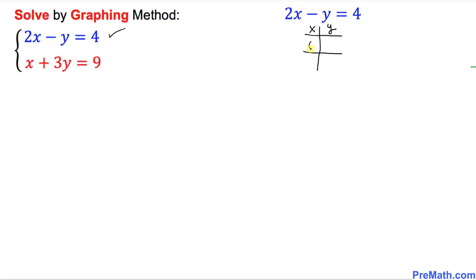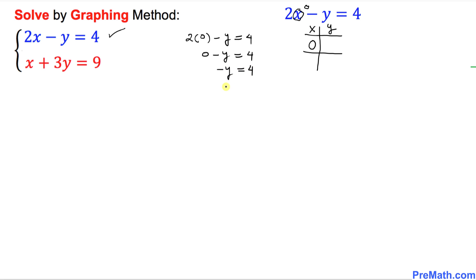First I am going to put x equal to zero and see how much y is going to be. Wherever you see x, it becomes zero. So this simplifies to: 2 times 0 minus y equals 4, which gives 0 minus y equals 4, so negative y equals 4, and therefore y equals negative 4.